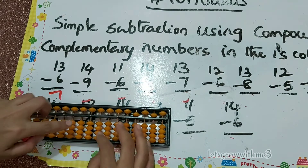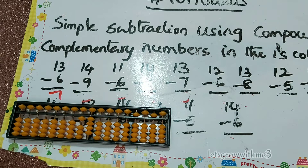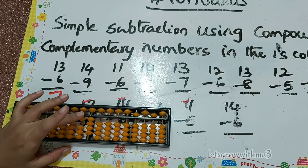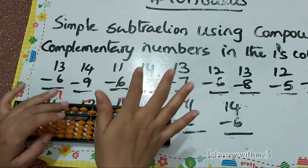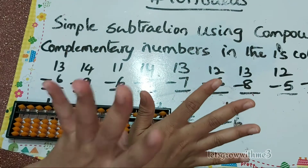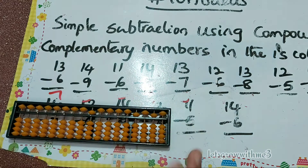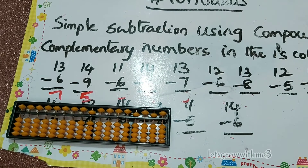Next: 14 minus 9. How to do minus 9? Minus 10 plus 1 — but here the plus 1 bead is not available, so we have to go for compound complementary numbers. The formula is papa down, mama down, babies down. How many babies for 9? That is 4. So we have to remove 4 beads. The formula is minus 10 plus 5 minus 4, which equals minus 9. So the answer is 5.